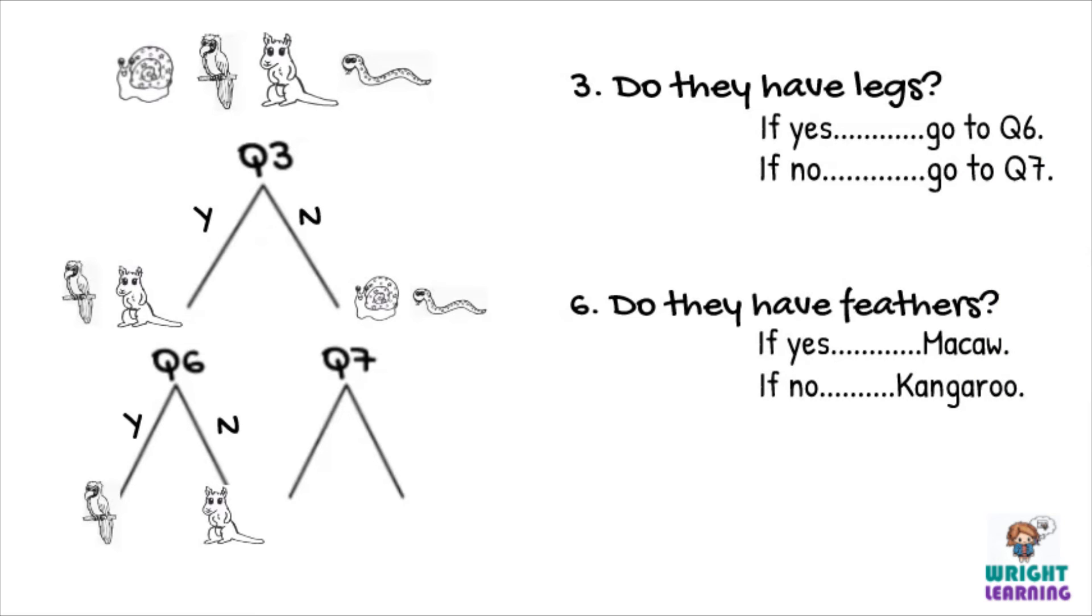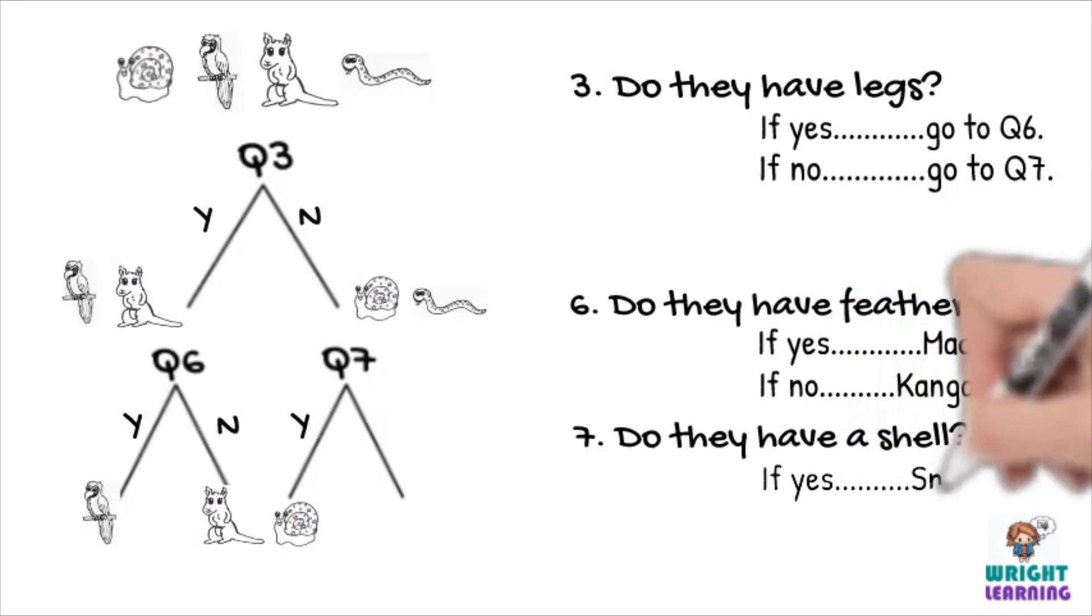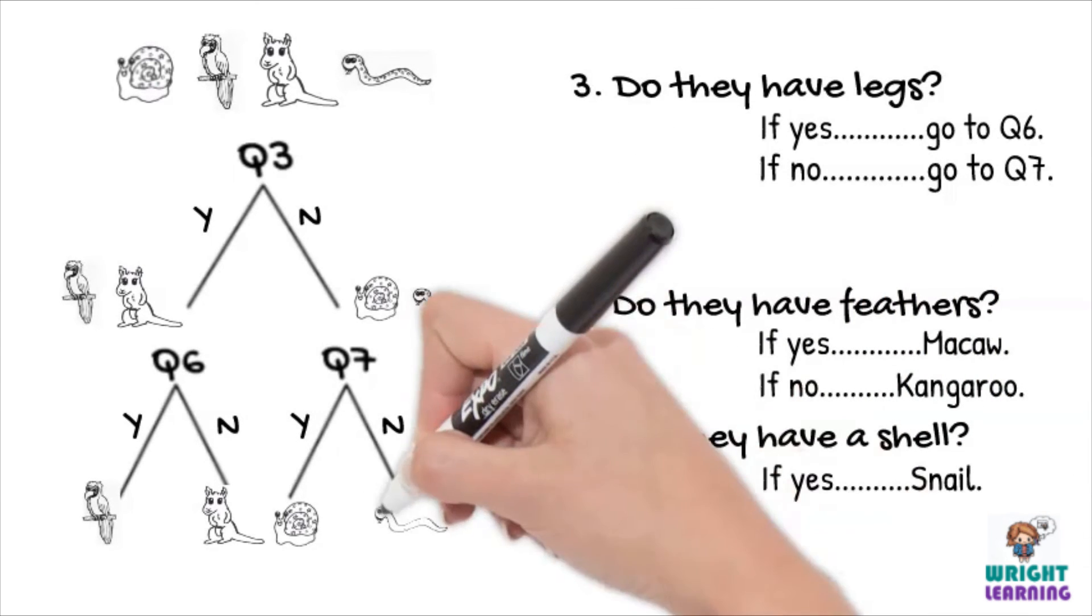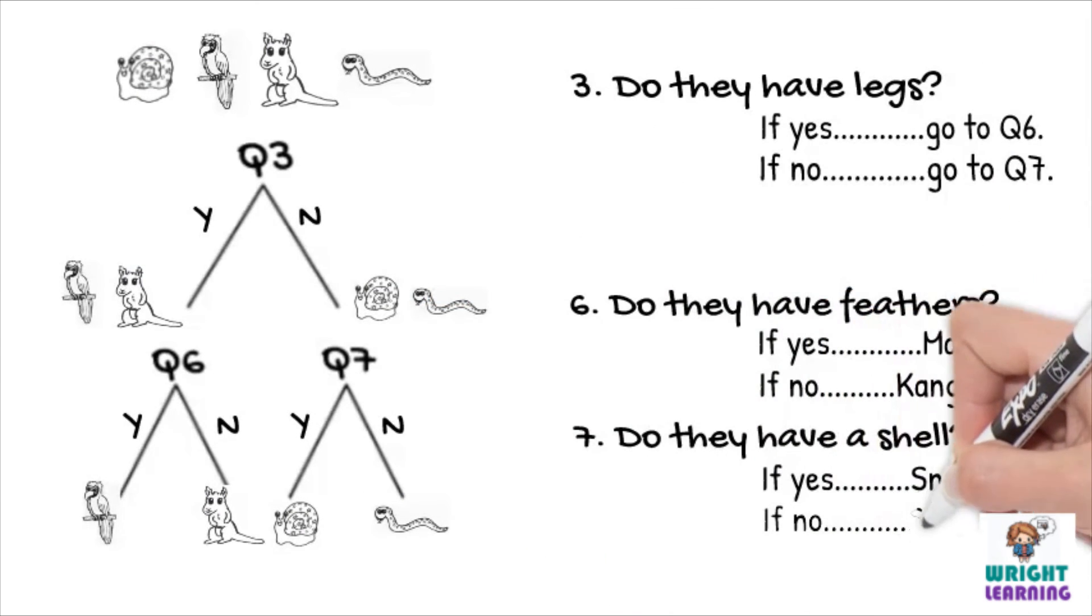Lastly, we just need a question that will distinguish between the snail and the snake. So, for question 7 we can ask, do they have a shell? Obviously the snail does, so under question 7, we write, if yes, snail. And because the snake doesn't have a shell, we write, if no, snake.